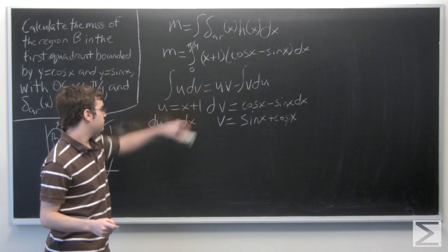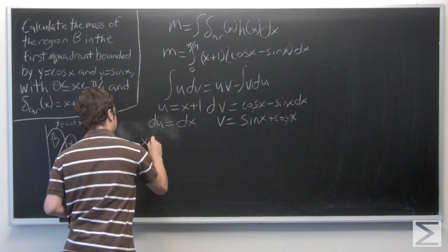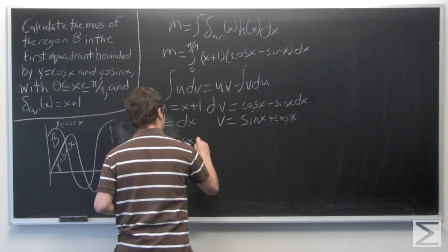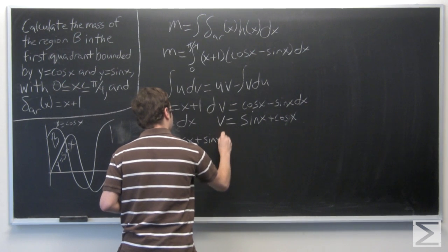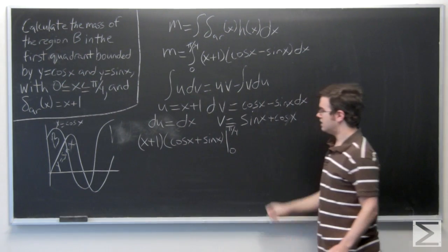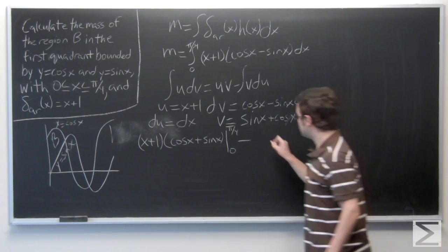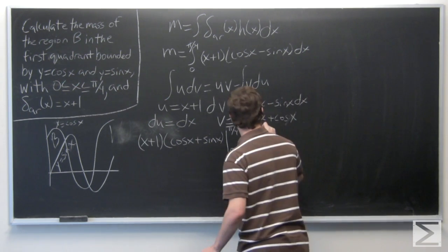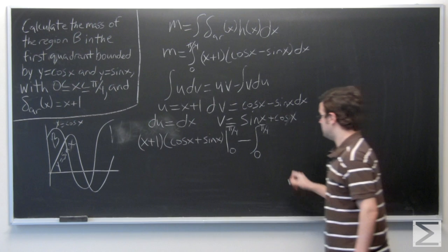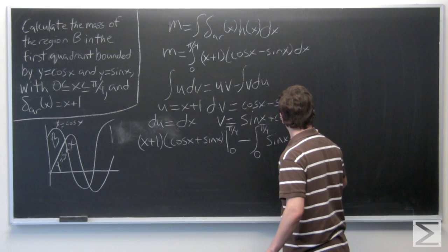Now we have all the components to solve by integration by parts. So u times v gives x plus 1 times sine of x plus cosine of x, evaluated from 0 to pi over 4, minus the integral of v du, which is the integral of sine of x plus cosine of x times dx.